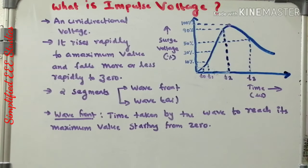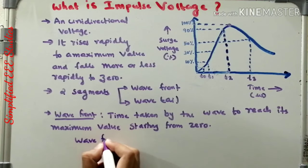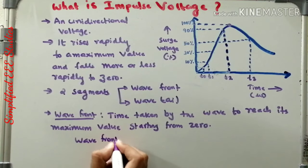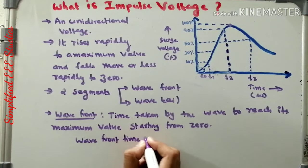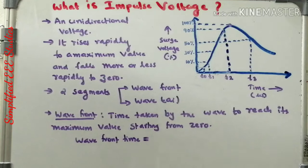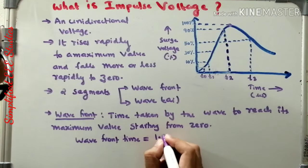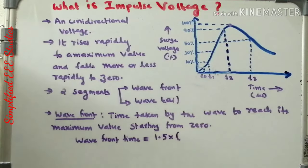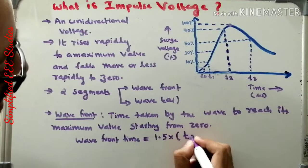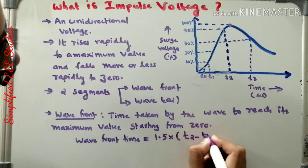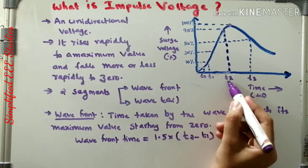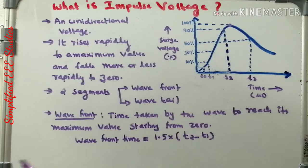Wavefront time can be calculated very easily by using one formula: 1.5 multiplied by T2 minus T1. You can see on the diagram — this is T2 and this will be T1.